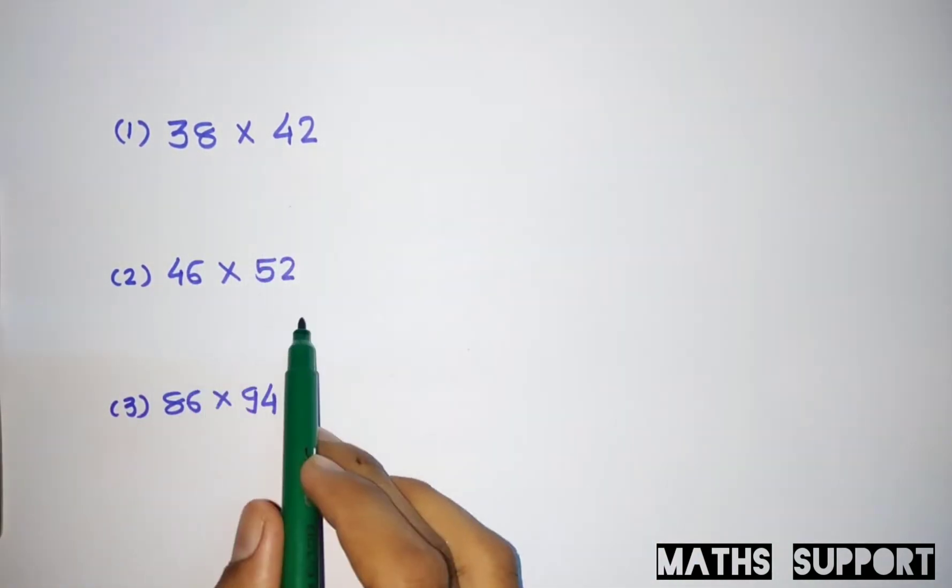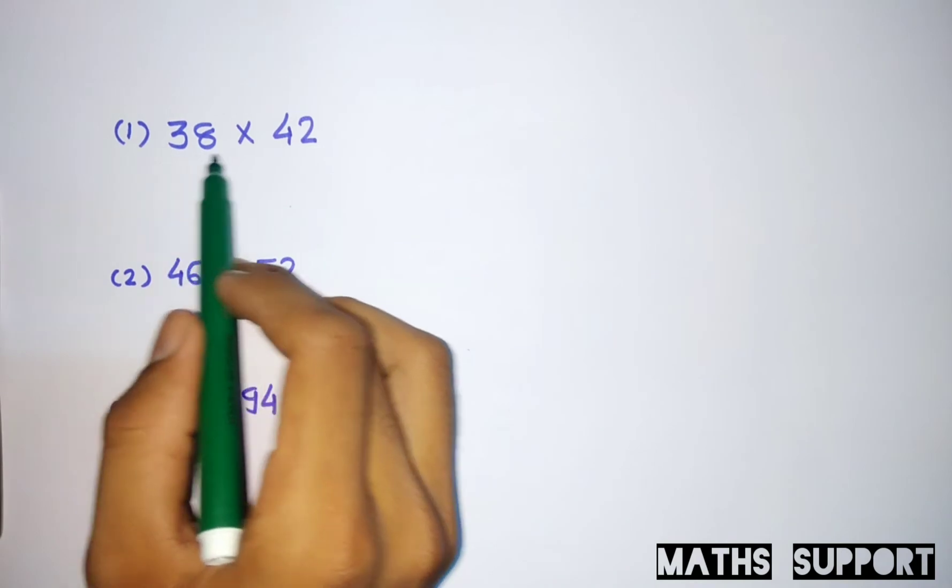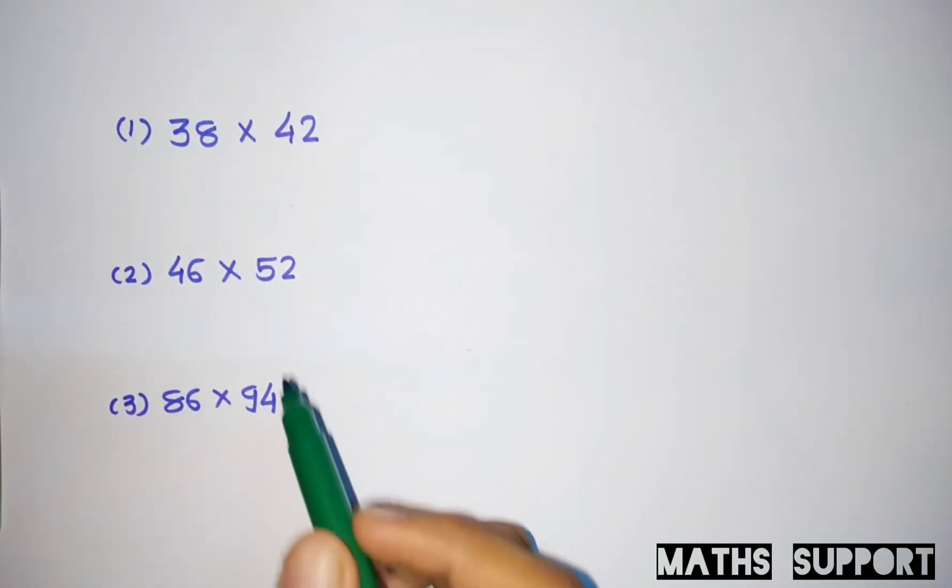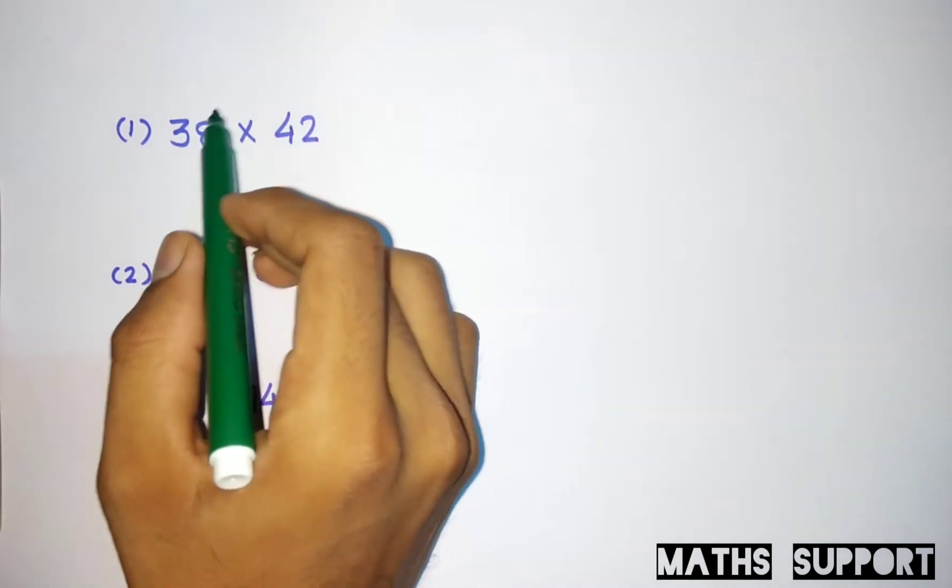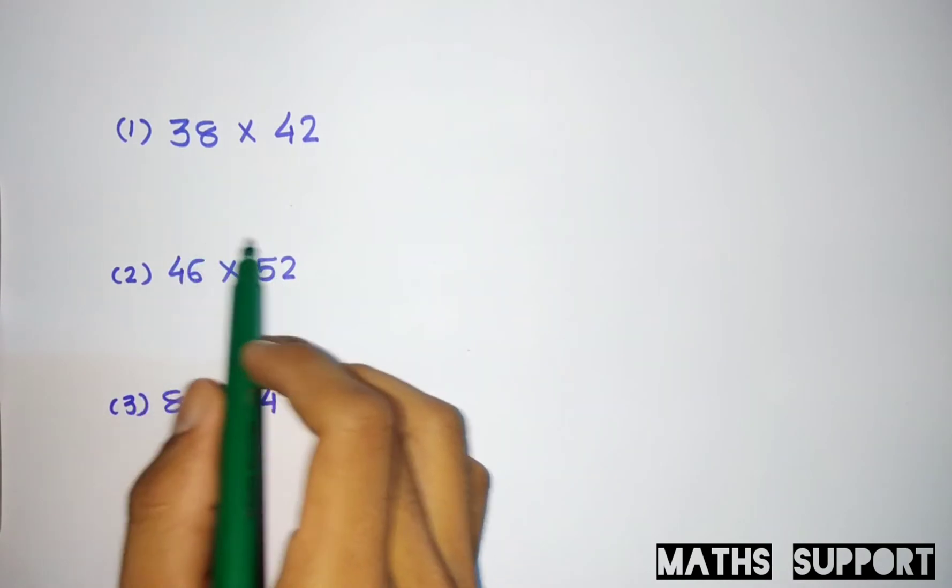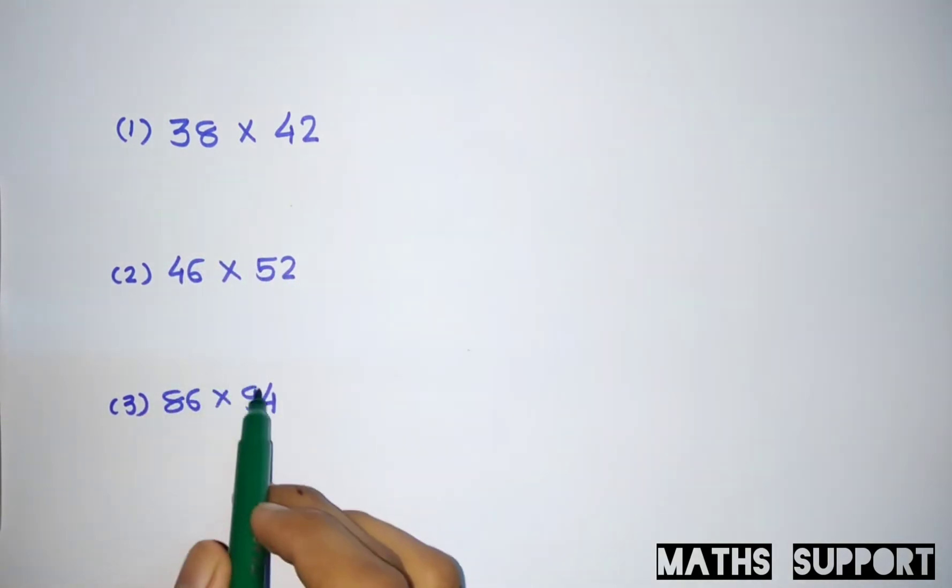First is 38 into 42, 46 into 52, and 56 into 94. Here you can see the difference of these two numbers is 4, here difference is 6, here difference is 8. So this trick is only applicable when the difference of two numbers is even. At that time you can apply this trick very easily.